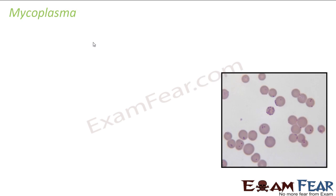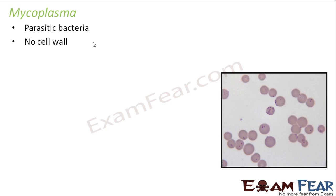Now let us talk about another type of bacteria — mycoplasma. It is a parasitic bacteria, meaning it is heterotrophic and depends on others for food, living inside the body of some other living organism — so it is a parasite, not a saprophyte. It has no cell wall. We are studying archaebacteria, eubacteria, and mycoplasma separately because even though they share common characteristics, each has specific differences.